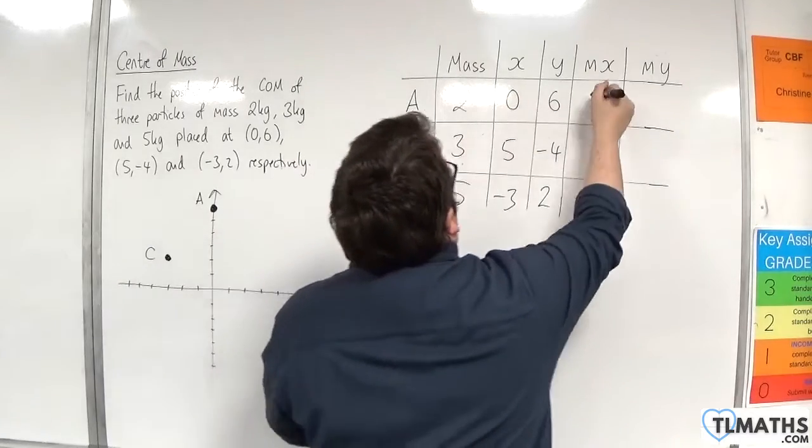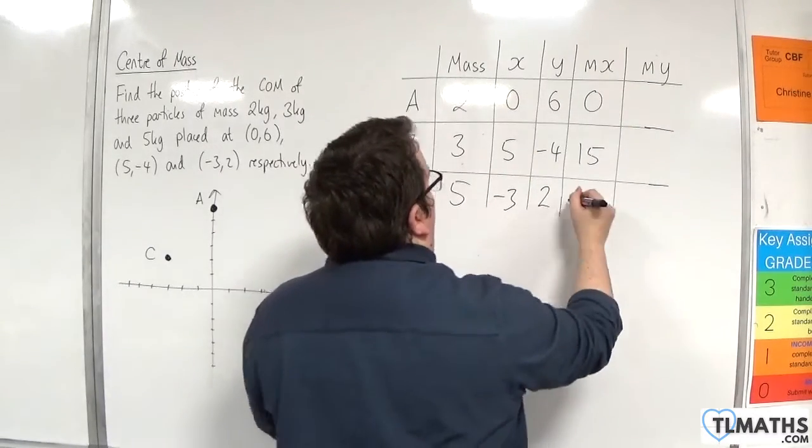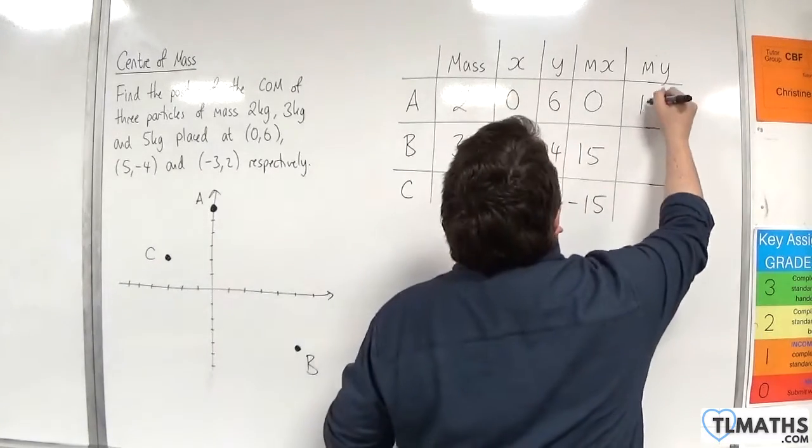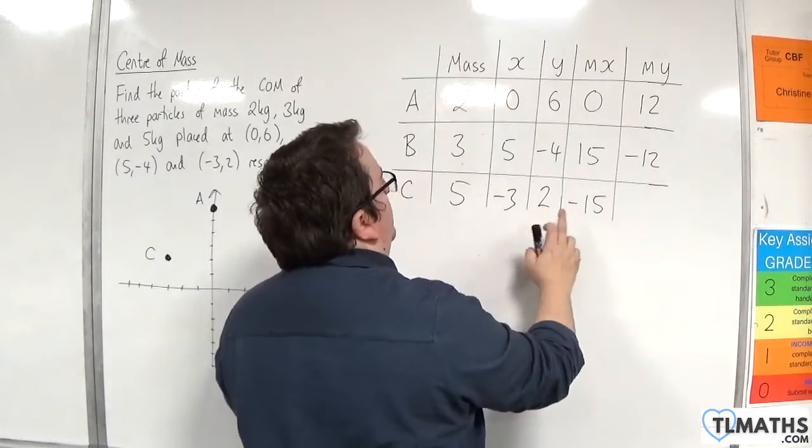So 2 times 0, 3 times 5, 5 times minus 3. We're going to have 2 times 6, 3 times minus 4, and then 5 times 2.